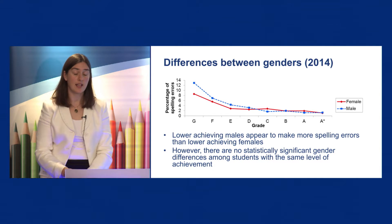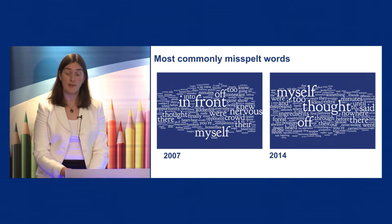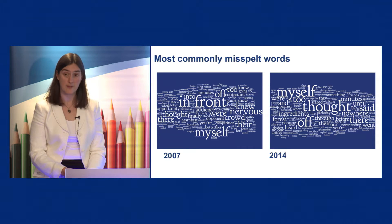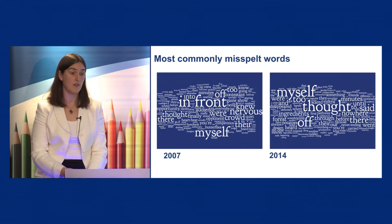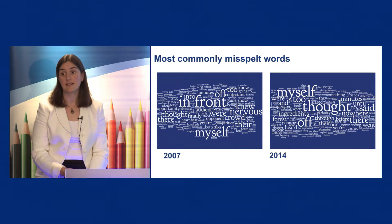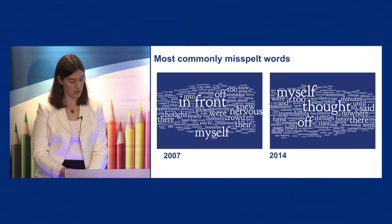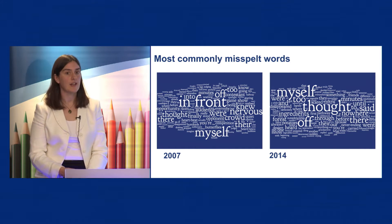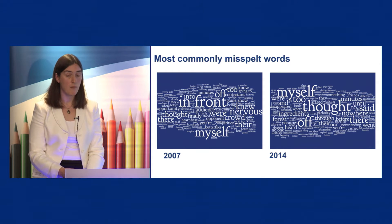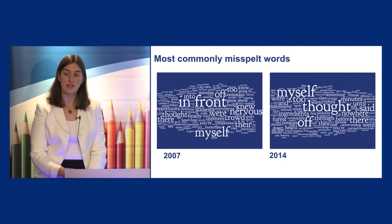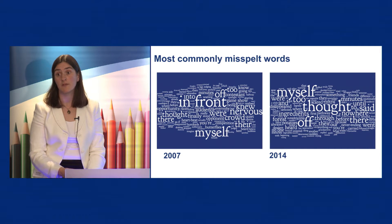I'm now going to look at the second stage of the analysis, which investigated the commonly misspelt words. This particular analysis has looked at words from 2007 and 2014, and definitive lists of the misspelt words can be found in Appendix C of your report. We are currently working on identifying the spelling errors in the 100-word sample from 2004. The two word clouds on screen show the 150 words that were most commonly misspelt by students in 2007 and 2014. Each word has been misspelt by at least two students, and the size of the word indicates the number of students who were misspelling it.